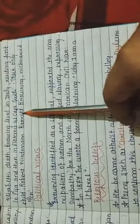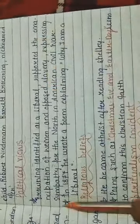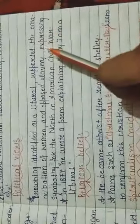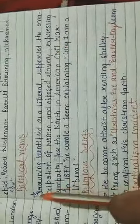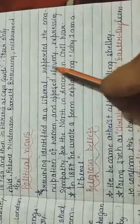His political views: Browning identified as a liberal, supported the emancipation of women, and opposed slavery, expressing sympathy for the North in the American Civil War. Like his wife Elizabeth Barrett Browning, he was also opposed to slavery and child labor, and he expressed sympathy for the North in the American Civil War. In 1877, he wrote a poem explaining Why Am I a Liberal?